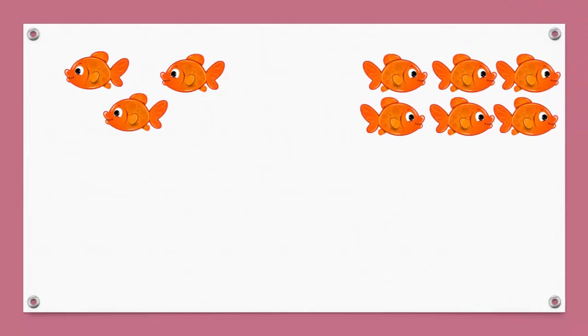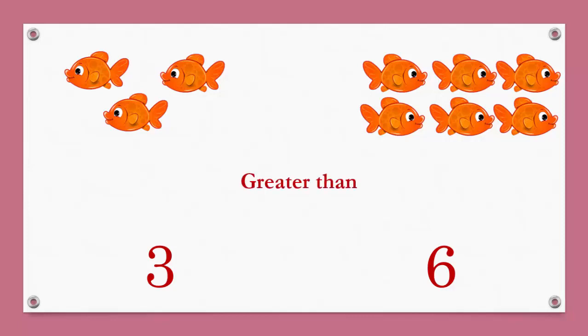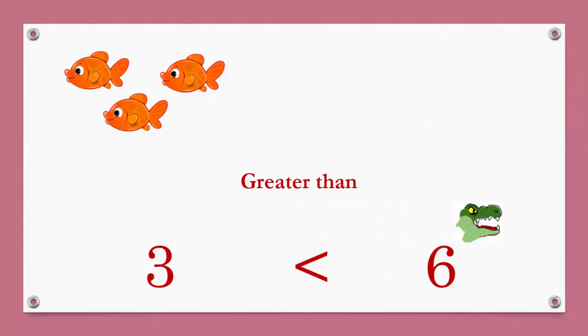Let's count these fishes: 1, 2, 3. Here are some more fishes: 1, 2, 3, 4, 5, 6. On the left hand side there are 3 fishes and on the right hand side there are 6 fishes. Which fishes do you think Mr. Crocodile will eat? Yes, the big number of fishes. So we will use the greater than sign here. Mr. Crocodile opens his mouth to the 6 fishes — he is going to eat them.